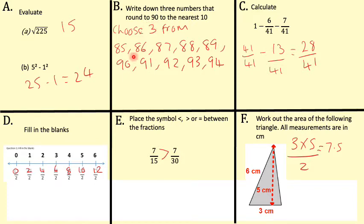The same applies if we're above 90 — 90, 91, 92, 93, 94. We look at the units column and it has to be below 5 for us to round down to 90.